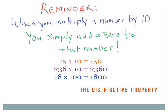Here's a side note that every one of you should know and use just about every day. When you multiply a number by 10, you simply add a 0 to that first number. If I'm multiplying 15 times 10, the answer is going to be 15 with one 0 after it, or 150. If I'm going to multiply 236 times 10, then the answer is going to be 236 with one 0 after it, or 2,360. If I multiply 18 times 100, I've got an 18 and then two 0s, and my answer is 1,800.